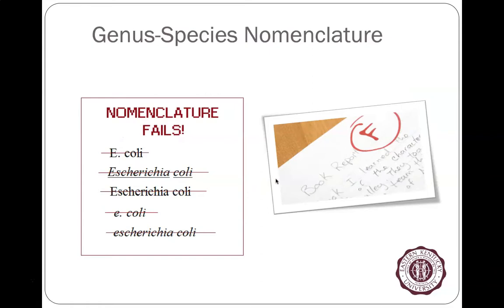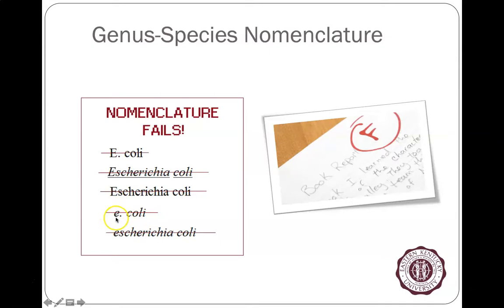Common mistakes include: not italicizing, underlining when it shouldn't be, and failing to capitalize the genus. For example, the genus E in E. coli needs to be a capital E. These are the typical formatting errors to watch for.